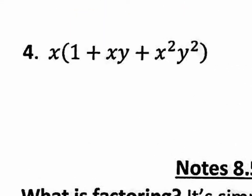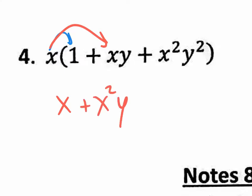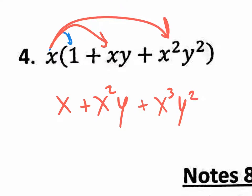Number four: we have a single variable distributed into a trinomial. So x times 1 gives 1x, and you could just write x. x times xy gives x squared y. x times x squared y squared gives x to the third y squared.